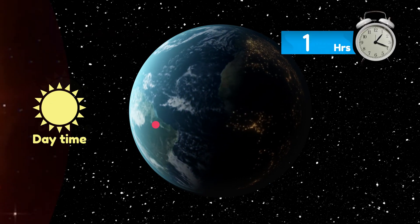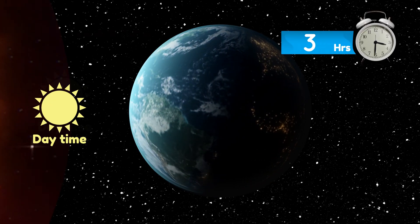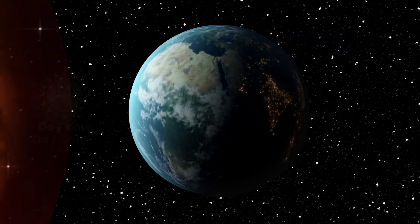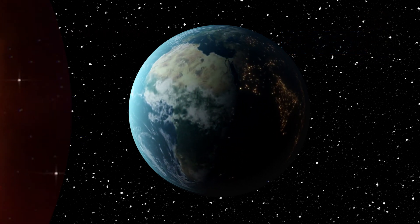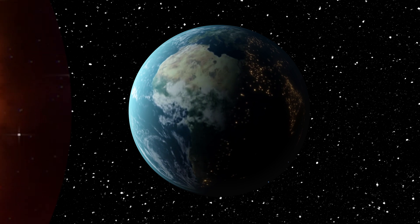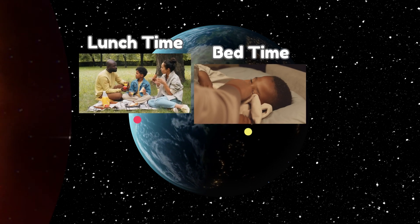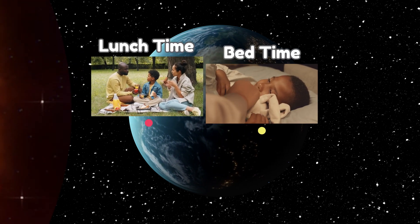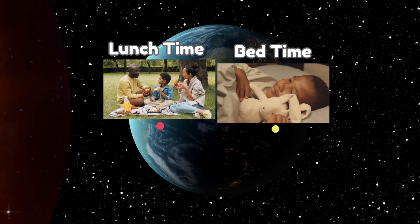So the time of day depends on where you are on the Earth. If you're on the yellow dot, it's bedtime. But at the same time, it's lunchtime on the red dot! Crazy!